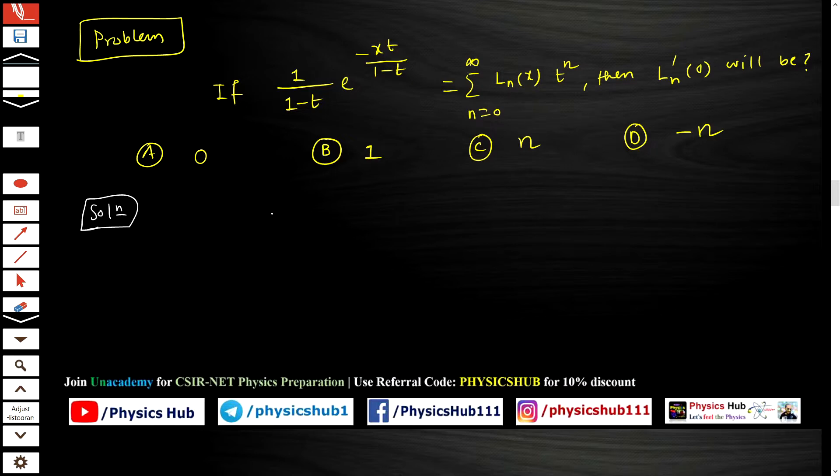So first of all, this expression 1/(1-t) * e^(-xt/(1-t)) equals the sum from n=0 to infinity of ln(x) * t^n. This is given to you in the question.